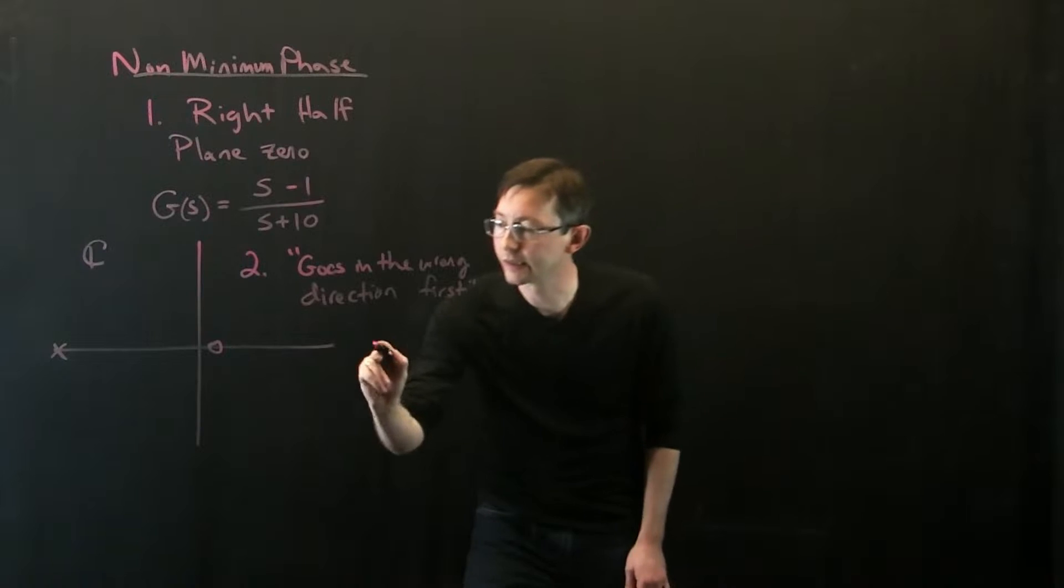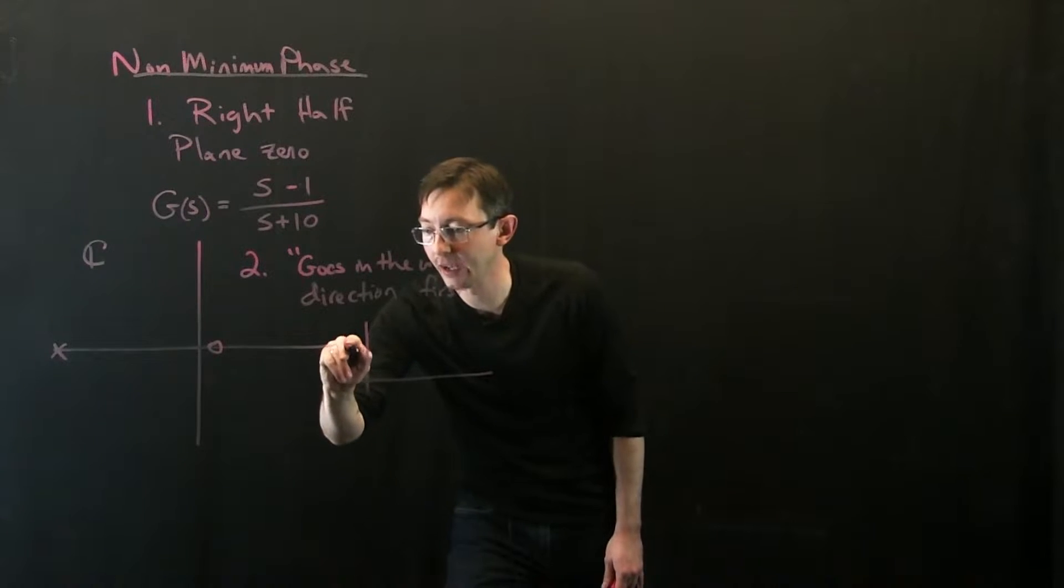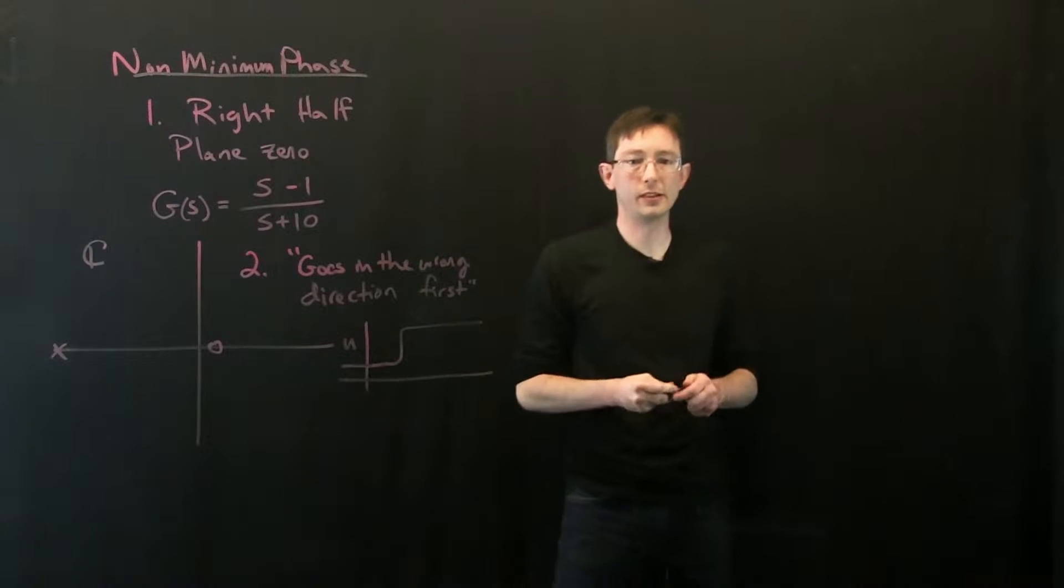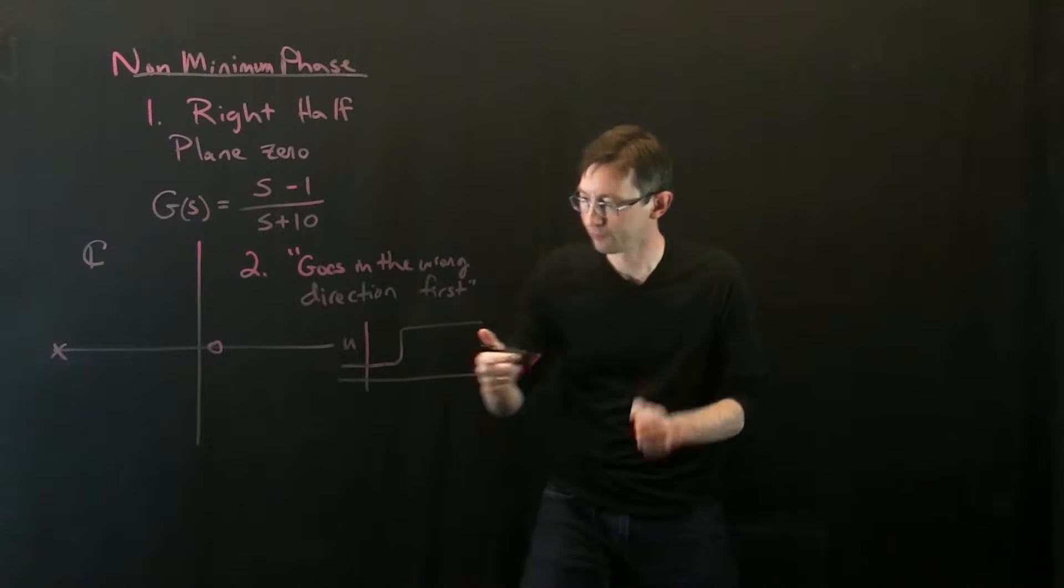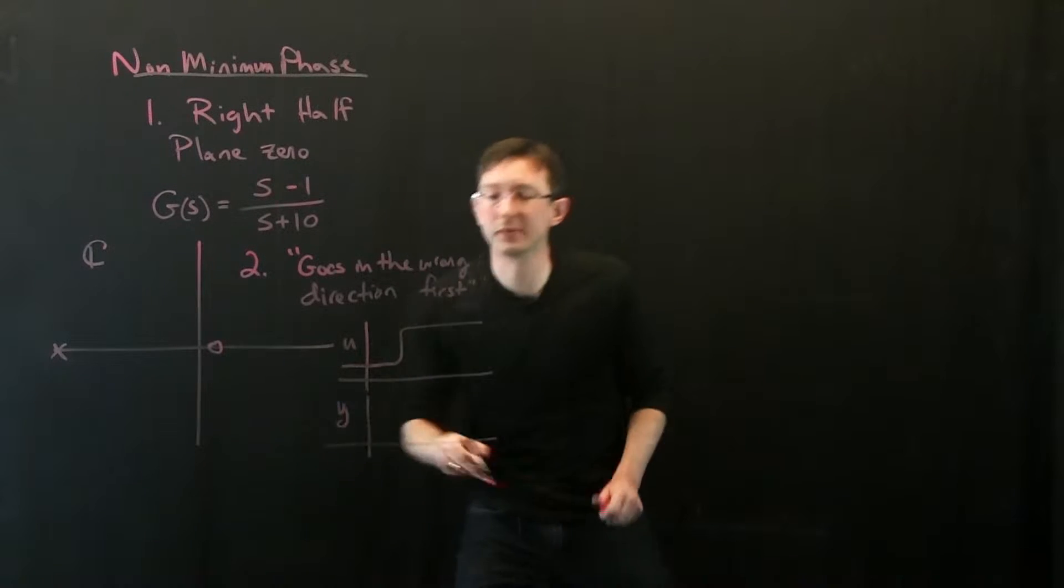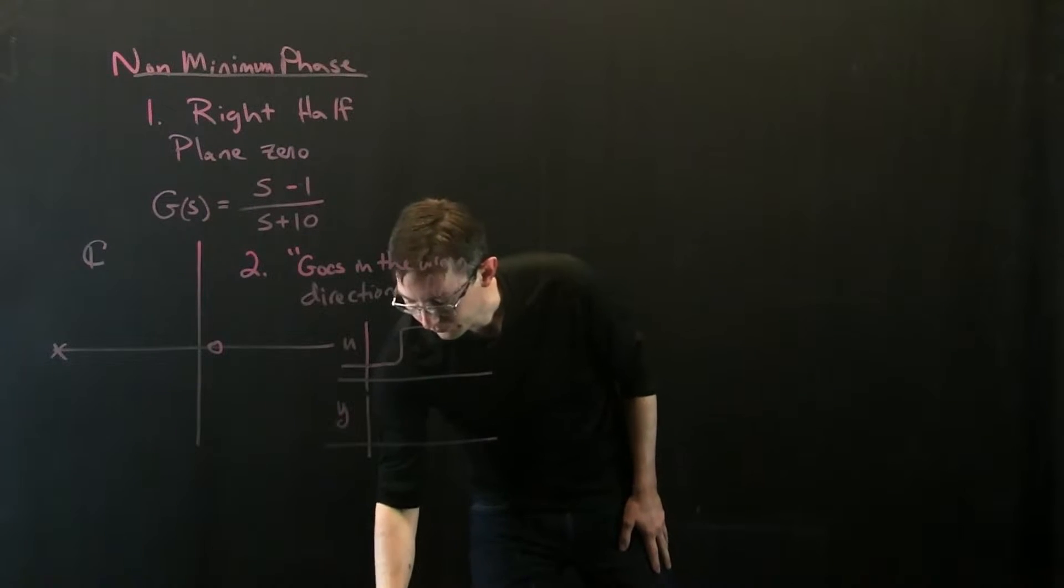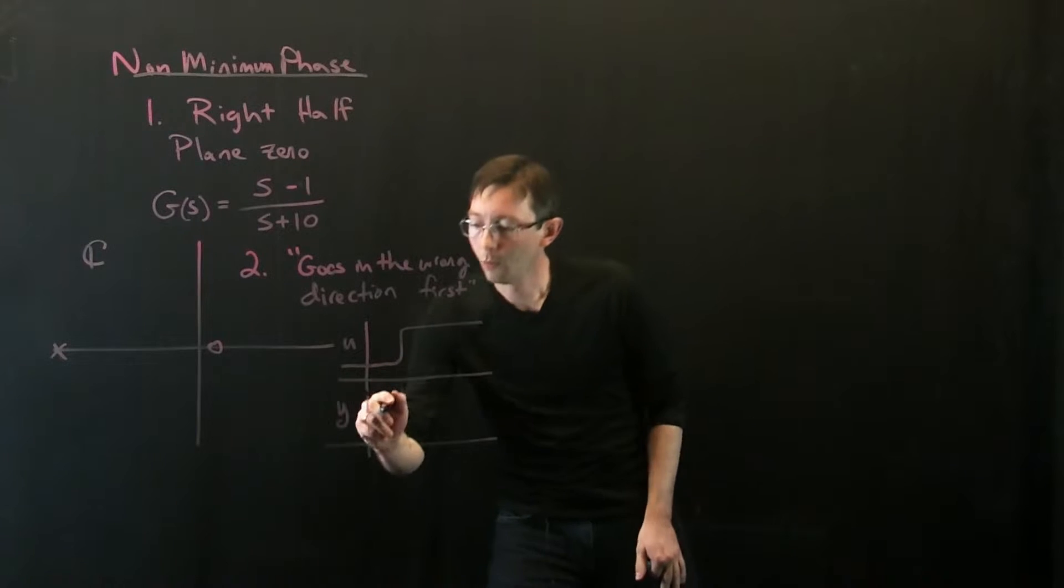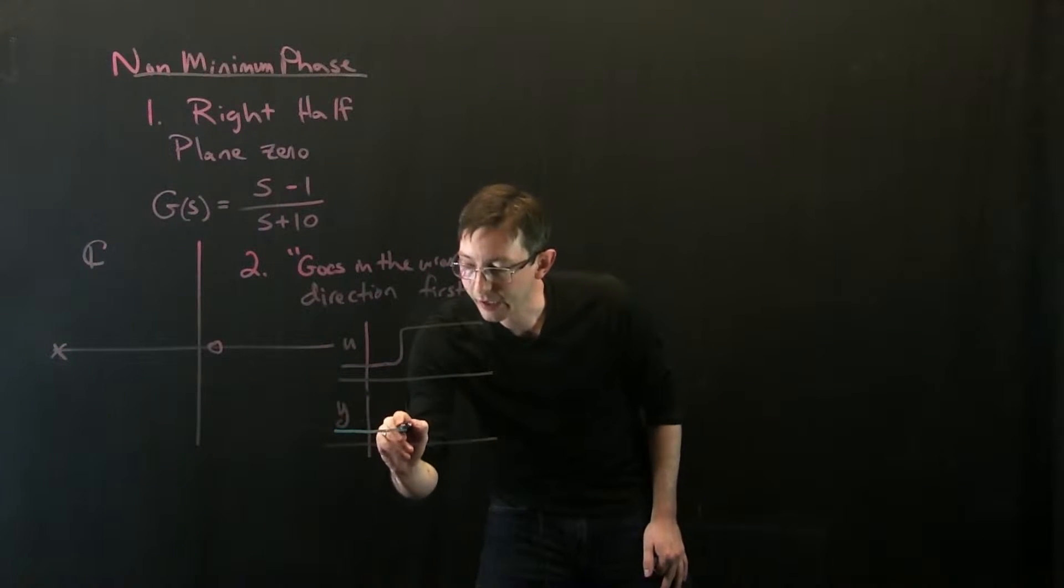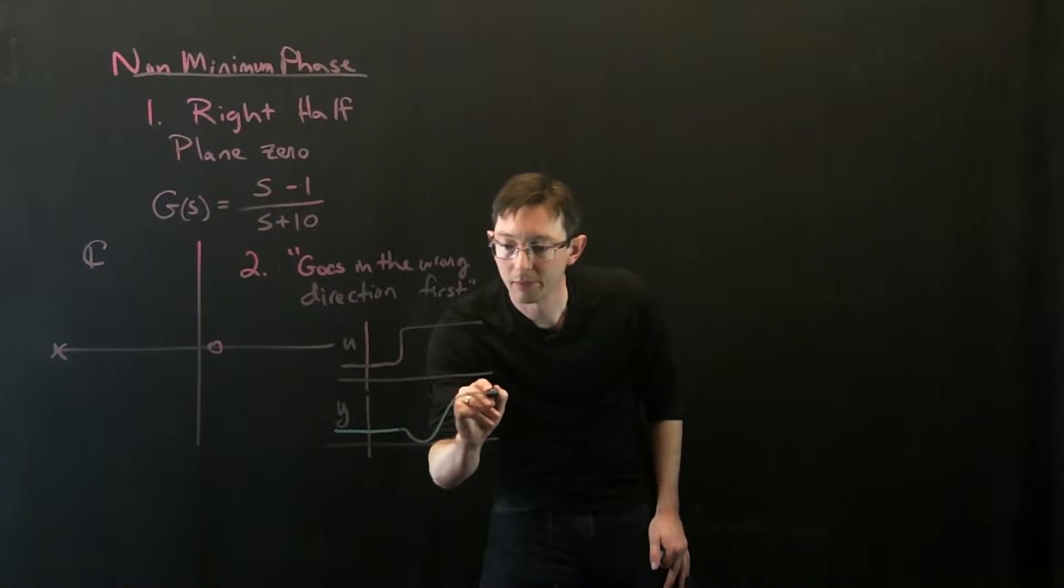So what I mean is, let's do a step response. Let's say I have u goes from, you know, 0 to 1. So u steps from 0 to 1 at some time. Then these strange non-minimum phase systems, what would happen with y is that y would, you know, it's going along, it gets this step and it actually turns in the wrong direction before correcting.